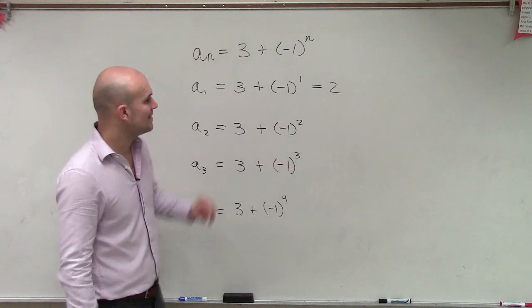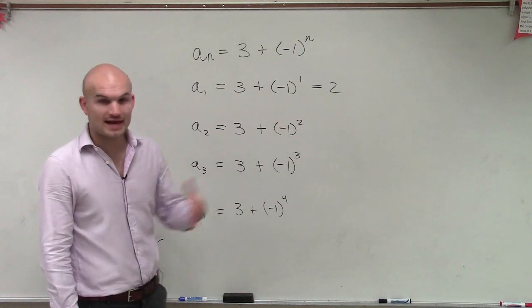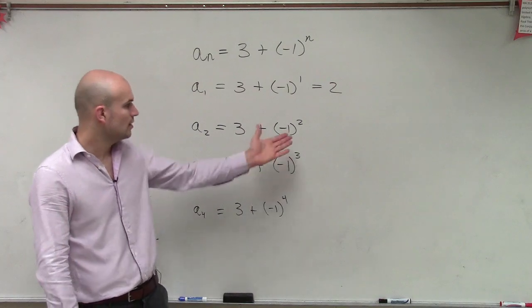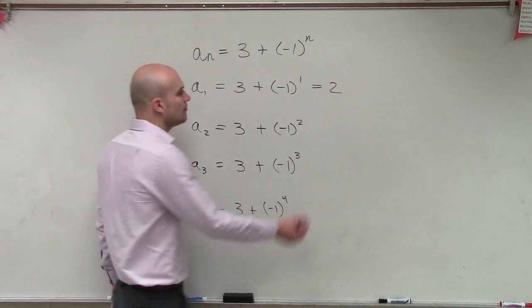Now we have negative 1 squared. So negative 1 times negative 1 is 1. 1 plus 3 is 4.